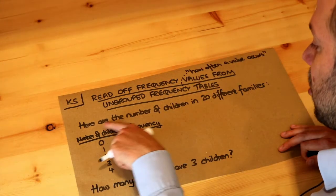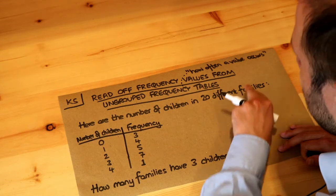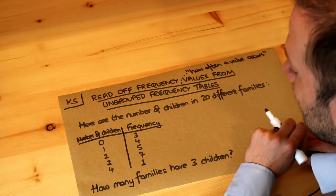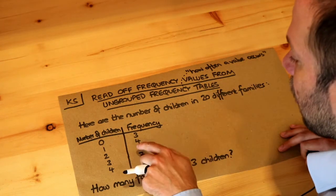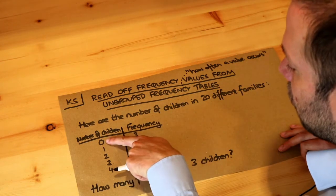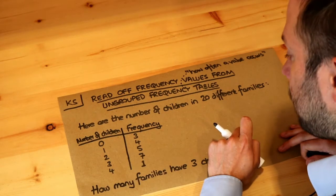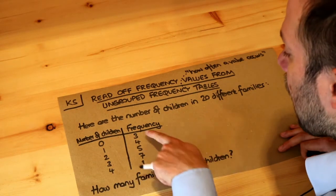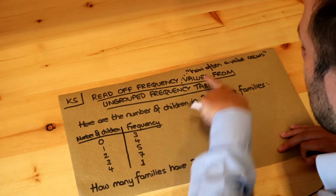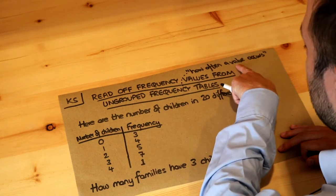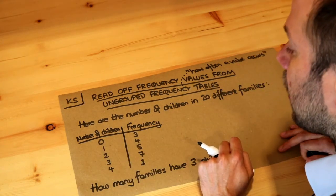So for example in this question we've got the number of children in 20 different families. Those different families can have different numbers of children, so the number of children could be zero, one, two, three, or four. And what the frequency tells us is how often that value — that number of children — occurs.